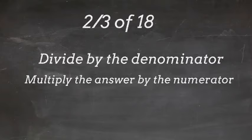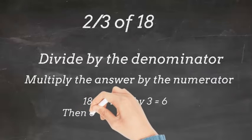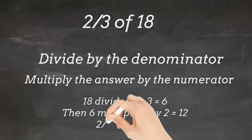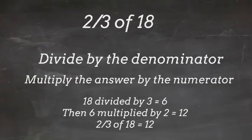Our denominator is 3, so we will do 18 divided by 3, which equals 6. Then we will do 6 multiplied by 2, because our numerator is 2, which equals 12. So 2 thirds of 18 equals 12.